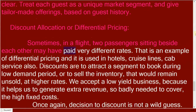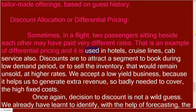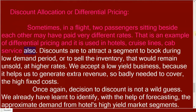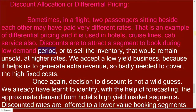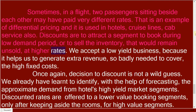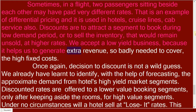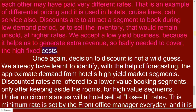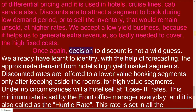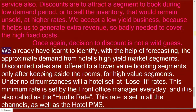Discount allocation or differential pricing: sometimes on a flight, two passengers sitting beside each other may have paid very different rates — that is an example of differential pricing, and it is used in hotels, cruise lines, and cab services as well. Discounts are used to attract a segment to book during a low-demand period or to sell inventory that would remain unsold at higher rates. We accept low-yield business because it helps us generate extra revenue, so badly needed to cover the high fixed costs.